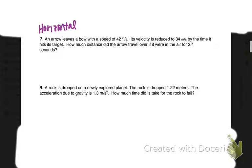We're going to call this a horizontal problem. We're assuming that the arrow is fired horizontally and it's going to land in the target horizontally. So we know the initial velocity is 42, my final velocity is 34, and my time was 2.4 seconds.